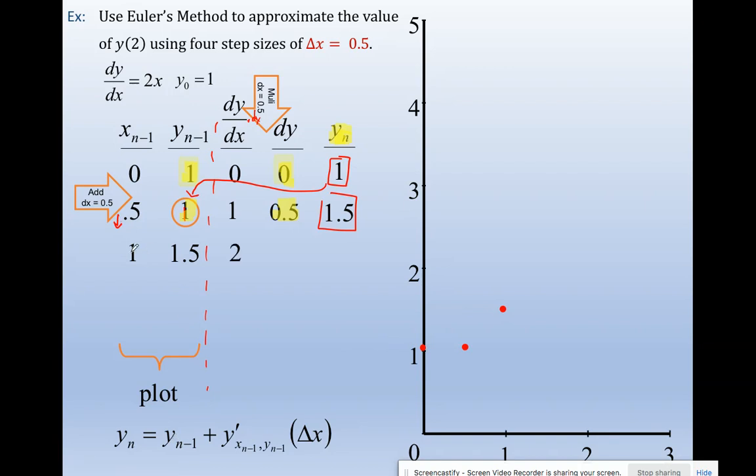Go to the slope generator, plug in 1 comma 1.5. I actually only need the x. Multiply dy/dx by dx, get 1. Take your old y, add your change in y, get your new y.